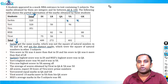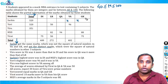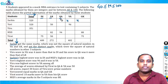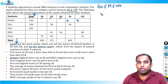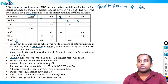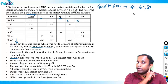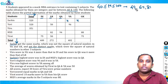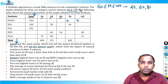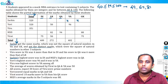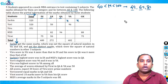Marks always lie between 40 and 100. So for Sachin's other three subjects — DI, LR, and QA — the marks must be perfect squares in this range. The perfect squares between 40 and 100 are 49, 64, and 81.